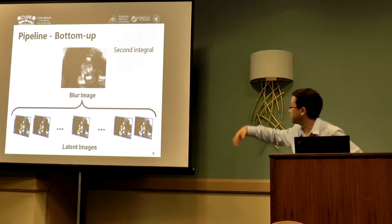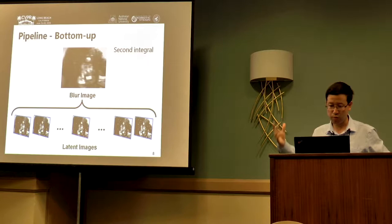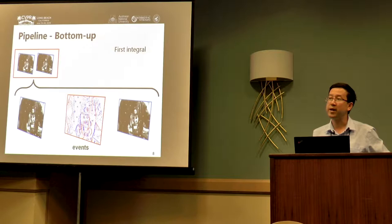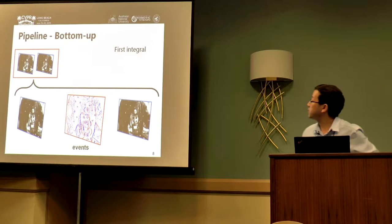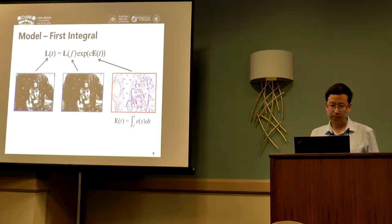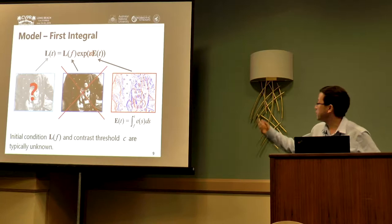What's more interesting is that if you integrate all this latent clean image, we will have the blurry image and so-called our second integral. But where is the first one? The first one is with the event camera model, which is that if we integrate the event in an interval, we transform the event data to the latent clean image.